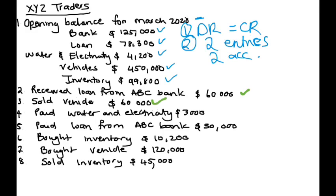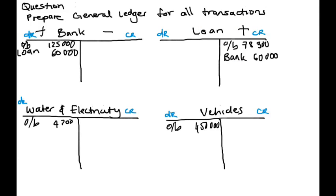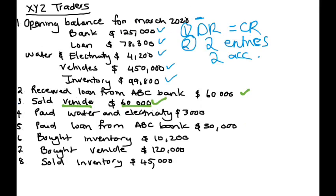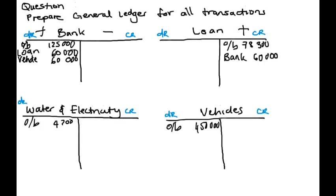Sold vehicle of $60,000. Two accounts involved. We sold the vehicle, so that's the vehicle account involved. And when we sold the vehicle, we received money — money in the bank, $60,000. So in our bank account, we received money for a vehicle that was sold of $60,000. And in your vehicle account — we don't have more cars anymore; we have sold it off. So there are less assets. We received $60,000 through the bank.